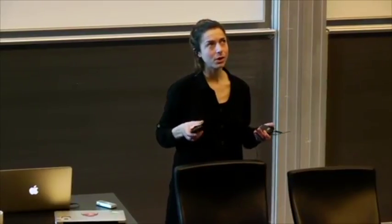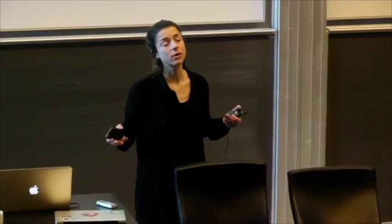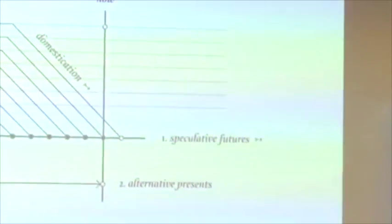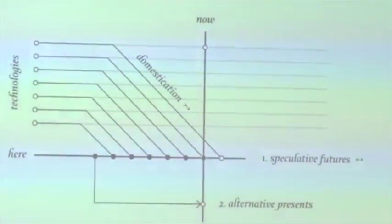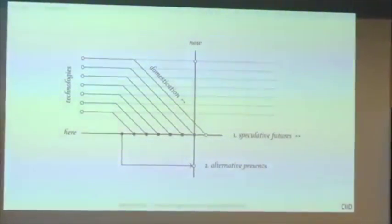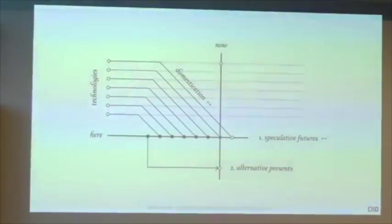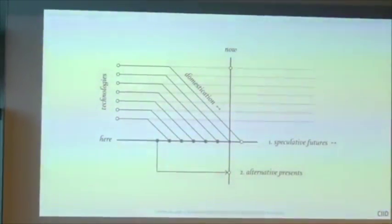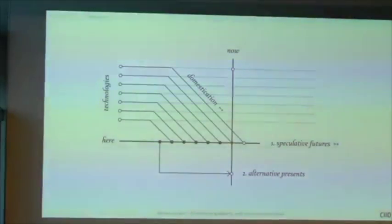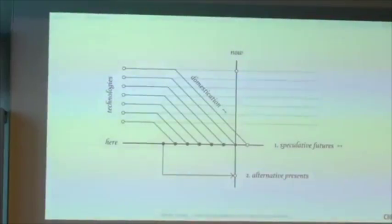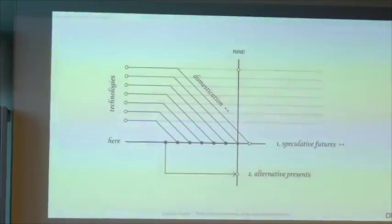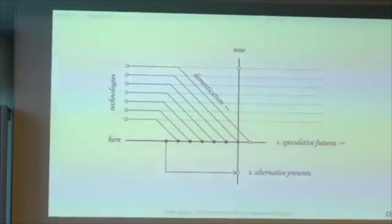We might build those out in current technology, but we will free ourselves from the constraints of day-to-day business requirements. This diagram is from James Auger and is about alternative presence and speculative futures. We have everyday life and real products available on the market in the center, and technologies further advanced and farther from our here and now — and we have to think about how to bring them into our present and what role they'll play in our future.